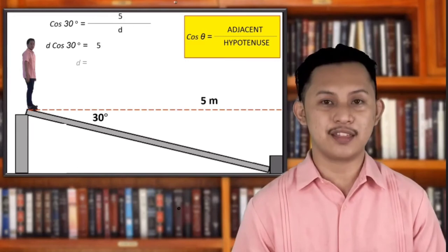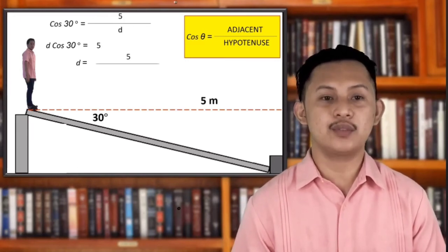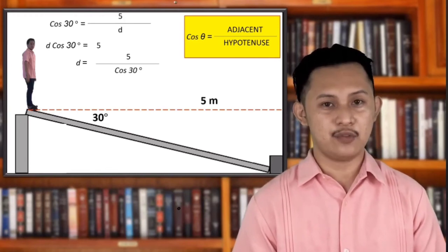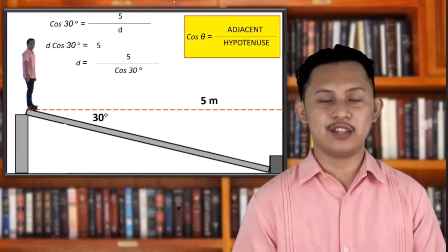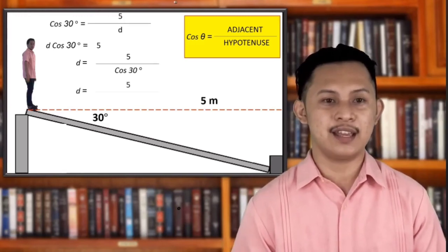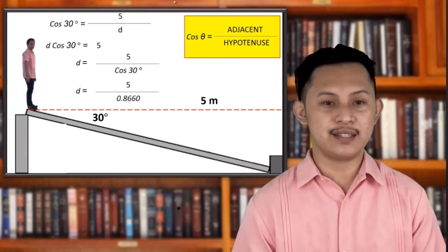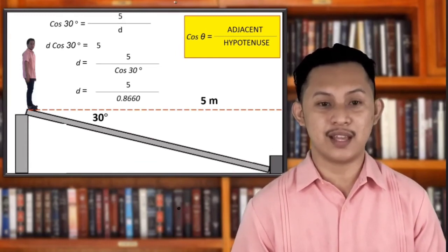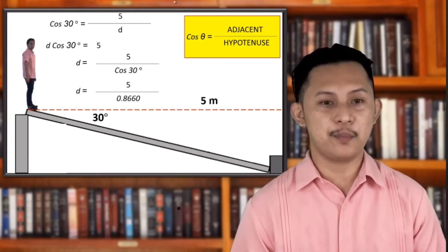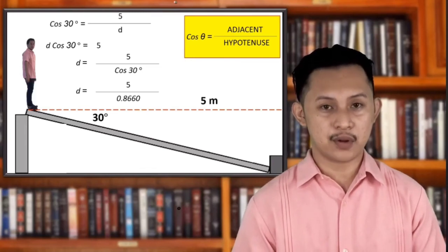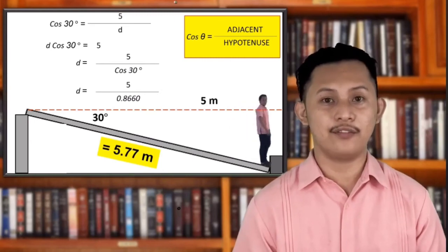So divide both sides by cosine 30 degrees. Then D is equal to 5 over cosine 30 degrees. Key in on the calculator the value of cosine 30 degrees, which is 0.8660. Divide 5 by 0.8660 and we can solve for the length of the ramp.